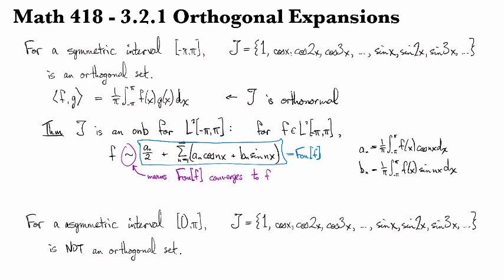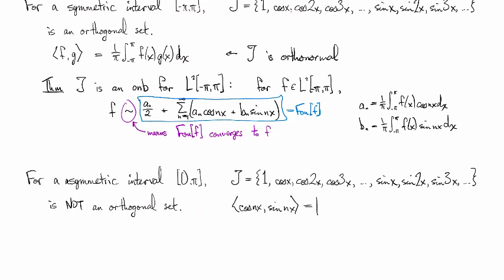And in fact, if you look at the inner product between cosine nx and sine nx, you find out that this is actually equal to 1 with this inner product as we've defined it, except with the domain of integration changed from 0 to pi.